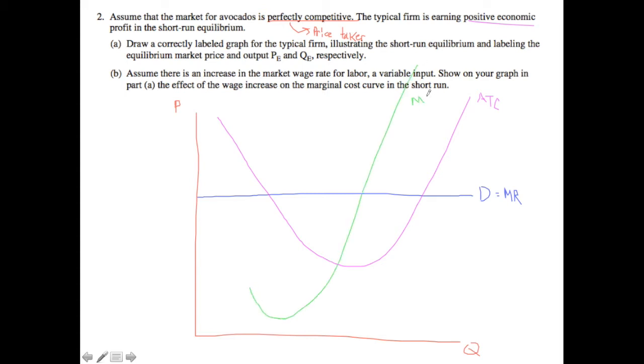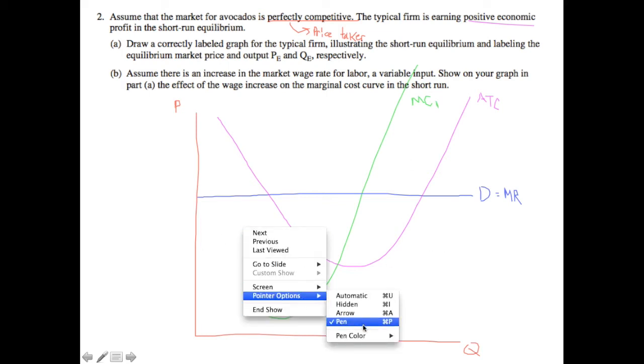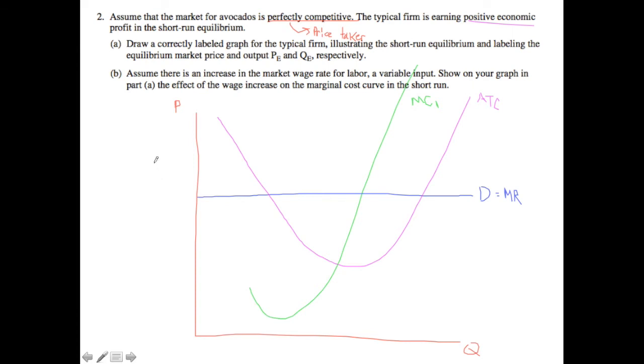So this is going to be our marginal cost curve 1. And so in this case, we need to find where price equals marginal cost because we are in a perfect competition situation. Therefore, where price equals marginal cost is going to happen at this point. And that is going to be our efficient QE. And the corresponding location on the vertical is going to be the PE.